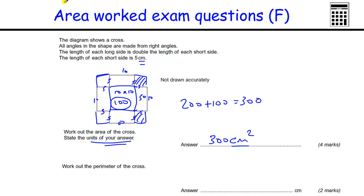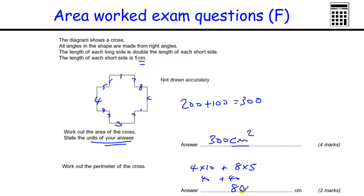Work out the perimeter of the cross. The perimeter is distance around the outside. So we've got 1, 2, 3, 4 lots of 10, and we've got 1, 2, 3, 4, 5, 6, 7, 8 lots of 5. I'm going to add those together, so 40 plus 40 is 80 centimeters.